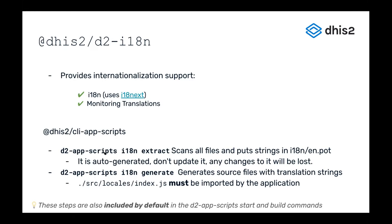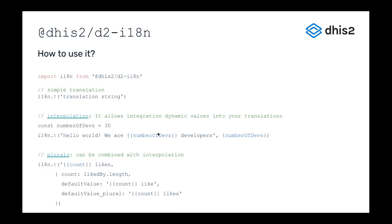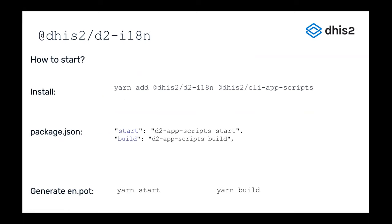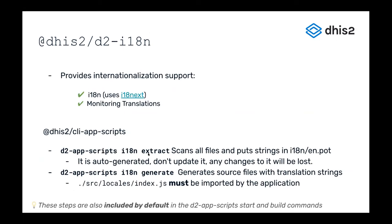When you run one of those scripts, it extracts all strings from your source code and puts them into a file called en.pot — the English version of the strings in your application — which you can then translate to any other language. It goes through every JavaScript file in the source folder looking for function calls like i18n.t, and the argument must be a literal string, not a variable.